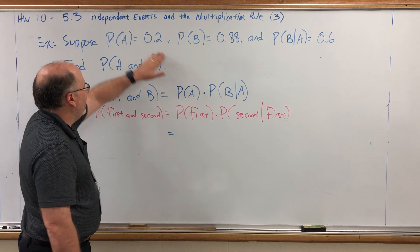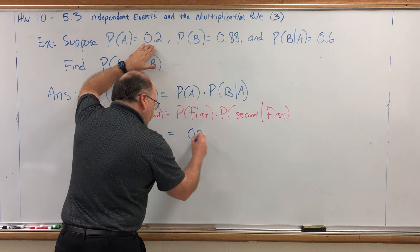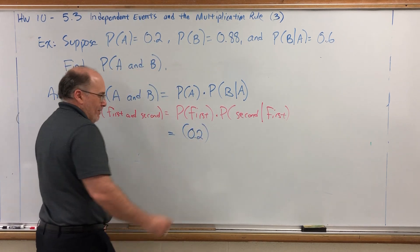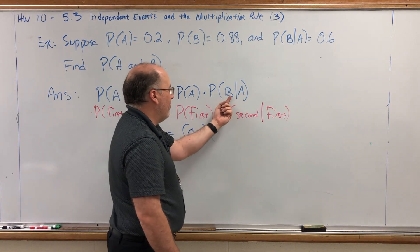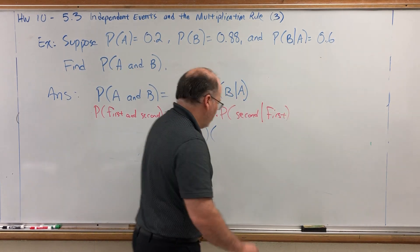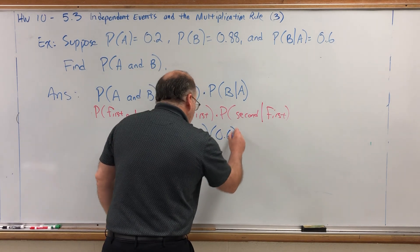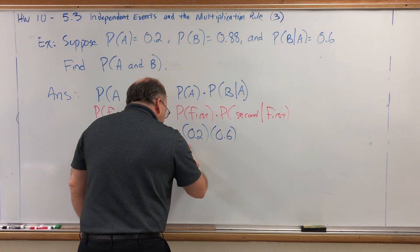Well, the probability of A is 0.2, so there's a 20% chance that A will happen. And given that A has already happened, the probability that B will happen is 60%. And if you multiply those, I believe you get 0.12.